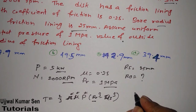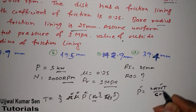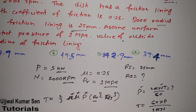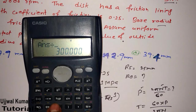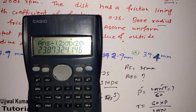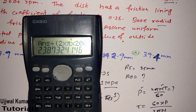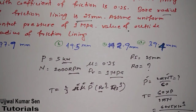Using Power = (2πNT) / 60, since power and n are given, we can find T. Rearranging: T = (60 × P) / (2πN) = (60 × 5 × 10³) / (2π × 2000). Using a calculator, T = 23.8732 Newton-meters. In the examination, take values up to four decimal places for most accuracy.